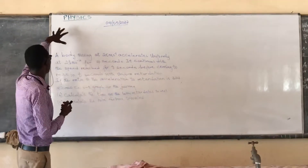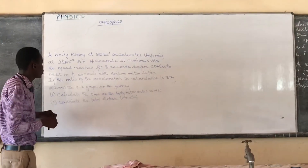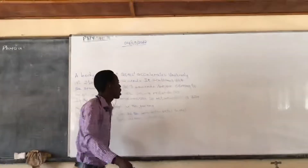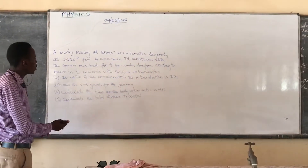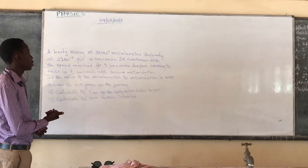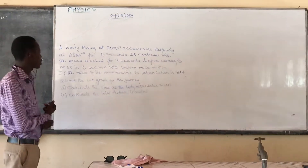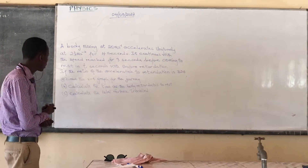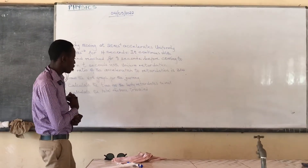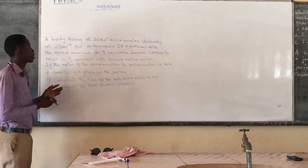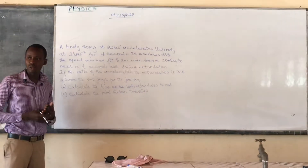Welcome, everyone. Today we have a question from the OAS exams — 3D18, private — but it came in under mathematics. We need to understand that the physics part of mathematics can also be used to explain what we need in motion, vectors, and other areas. First, we read the question in its entirety, and then we will guide you through how it is answered.